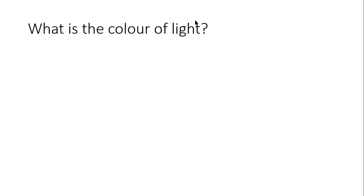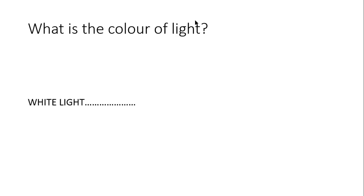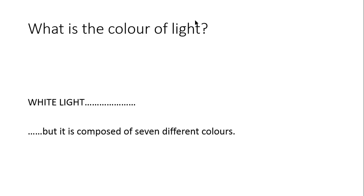Now let's learn about the color of light. The color of light is known as white, and natural light is known as white light, but it comprises seven different colors, which we call the spectrum.